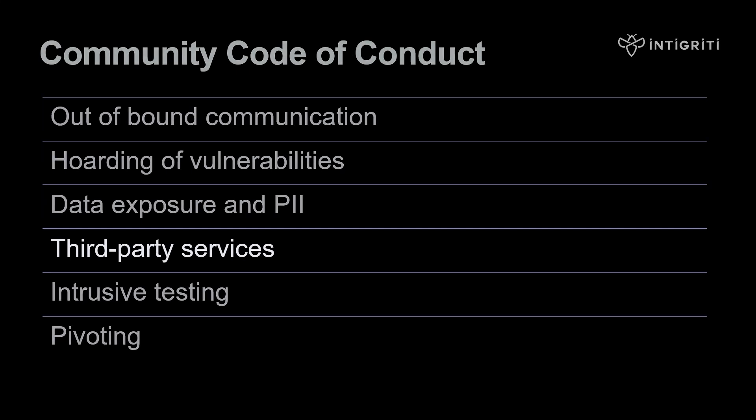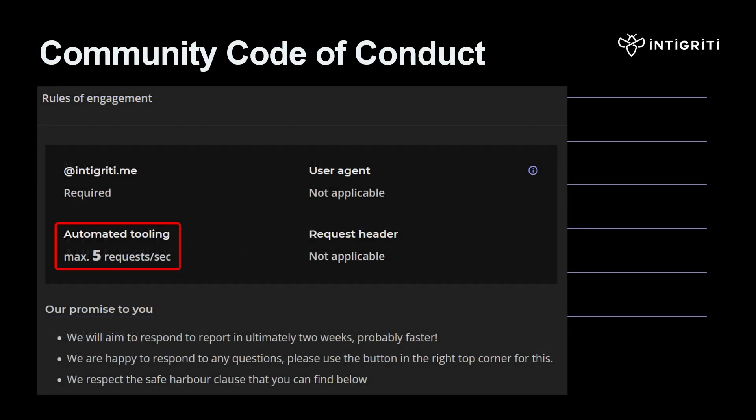We ask that you be very cautious when conducting automated tests to prevent service degradation — for example, by limiting the number of requests per second. This is often part of the program requirement, so check the program details for the allowed requests per second when using automated tools, and look at the tool's documentation to find out how to adhere to that requirement.